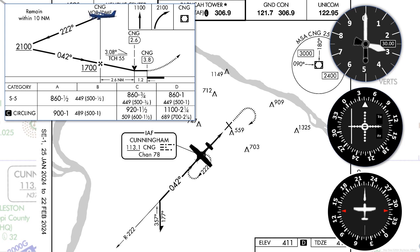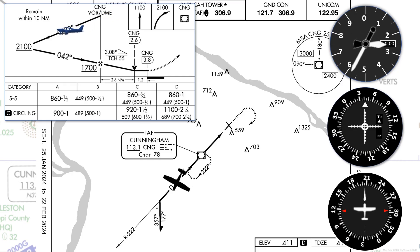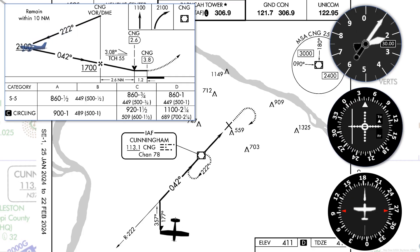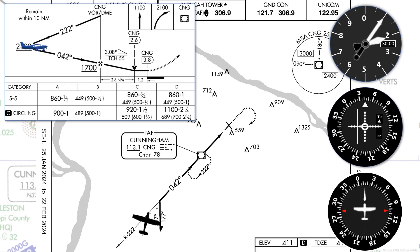Let's bring up an aircraft symbol on our profile view as well. Now that we're past the VOR, we can descend to 2,100 — the procedure turn altitude. When we decide we're far enough out, we can start the course reversal, first turning to 177 degrees, then after one minute, turning right to 357 degrees. Once the needle comes in and we re-intercept the course, we turn to 0-4-2.